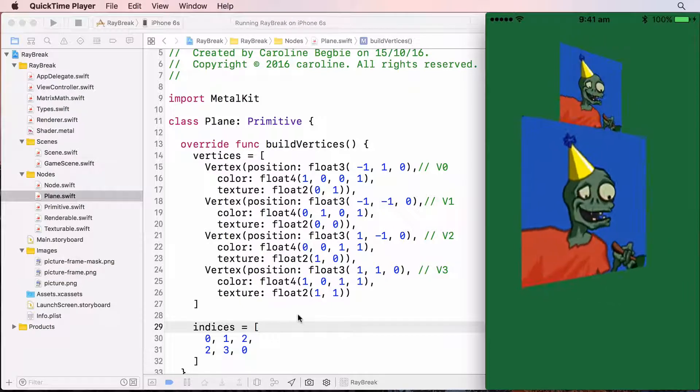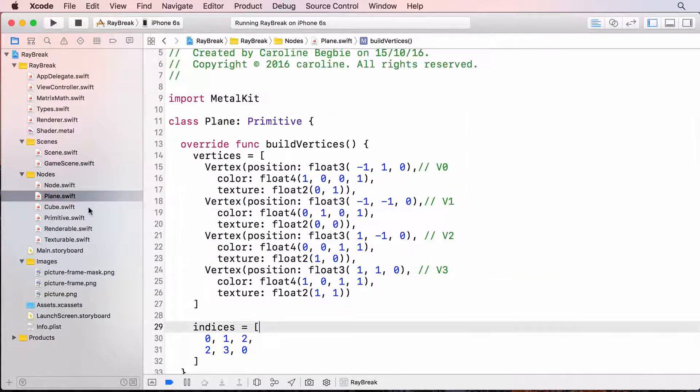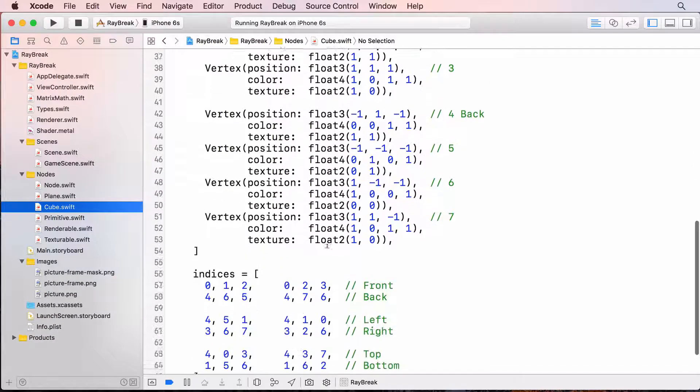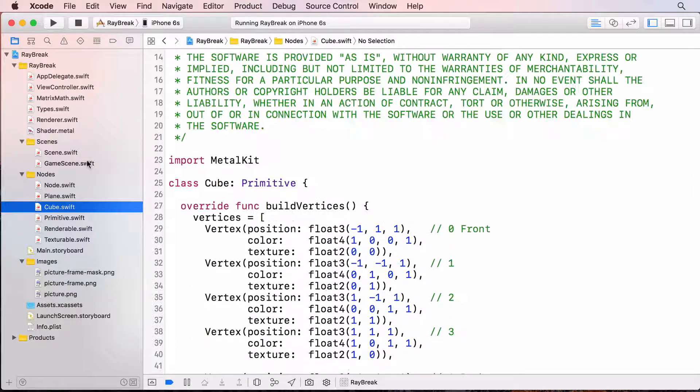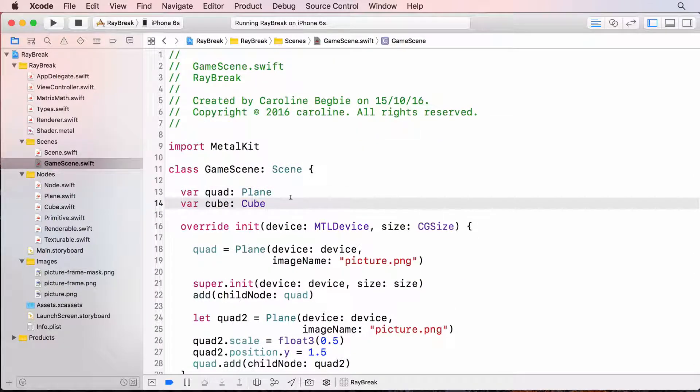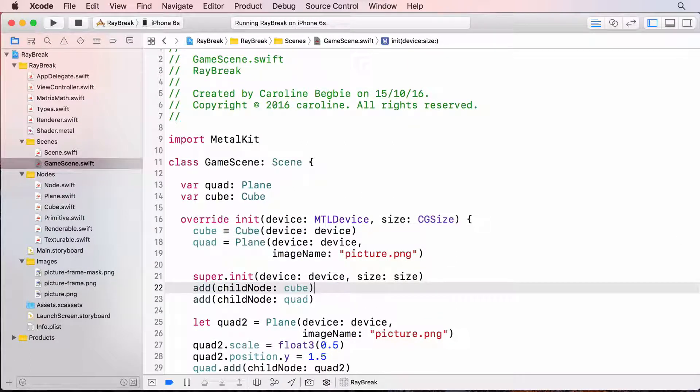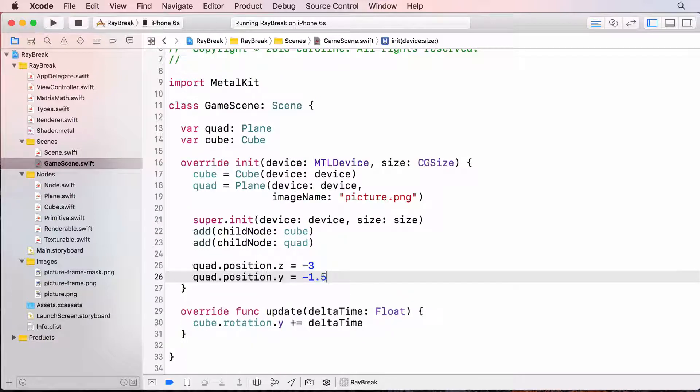So now I'll create a cube primitive. I've already created a cube.swift file with the vertices and indices so I'll just drag this in from the resources for this video. And you can see it just contains the vertex and index information. Now I can change game scene to add the cube as well as the plane. Because of all the refactoring we've done, you'll see how it's really easy to add new models with different vertices to the scene. And I'll change the cube to rotate instead of the quad. And I'll position the quad back behind the cube and down a little bit and get rid of the second quad. And build and run.